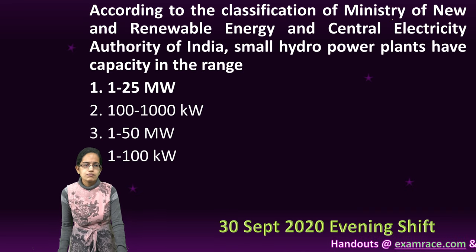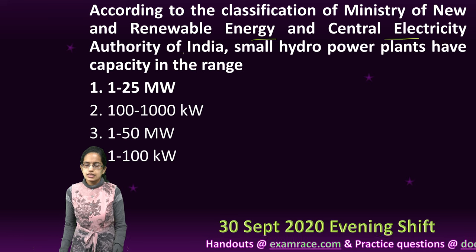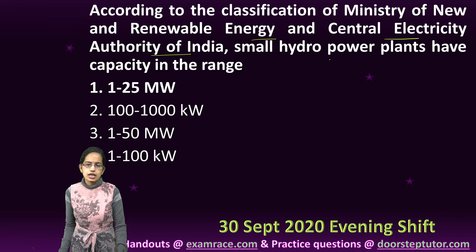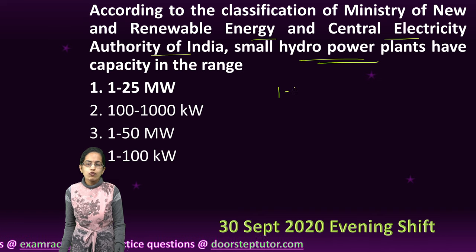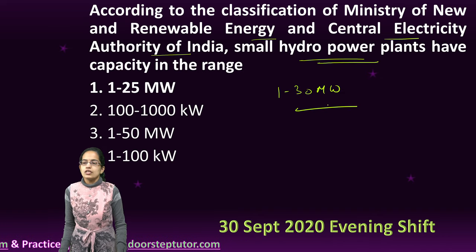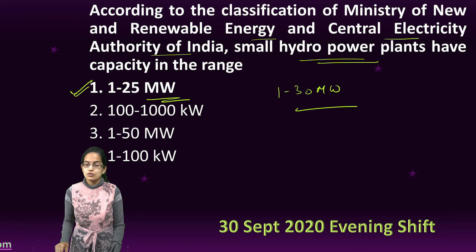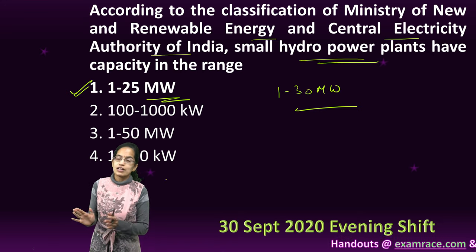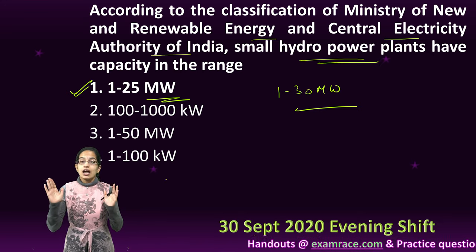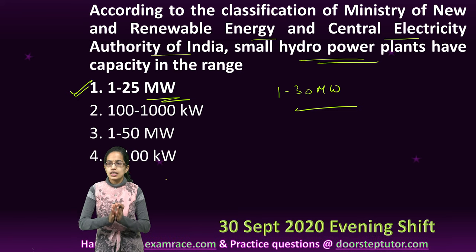The last question: according to the classification of the Ministry of New and Renewable Energy and Central Electricity Authority of India, small hydropower plants have a capability of 1 to 25 megawatts. Be careful of the units — whether it is megawatt or kilowatt — as you can have the same choices with different units. Be very attentive while solving the question. So option 1 is the right answer here.